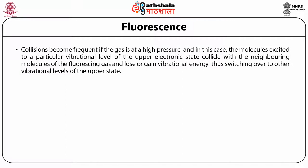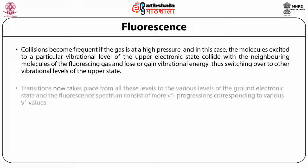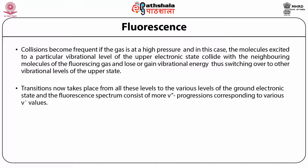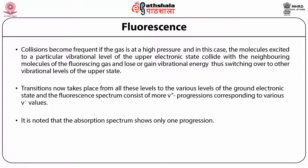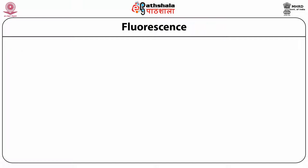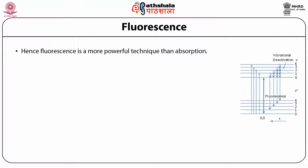Collisions become frequent if the gas is at high pressure, and in this case the molecules excited to a particular vibrational level of the upper electronic state collide with neighboring molecules of the fluorescent gas and lose or gain vibrational energy, thus switching over to other vibrational levels of the upper state. Transitions now take place from all these levels to various levels of the ground electronic state, and the fluorescence spectrum consists of more nu'' progressions corresponding to various nu' values. It is noted that the absorption spectrum shows only one progression. Hence, fluorescence is a more powerful technique than absorption.